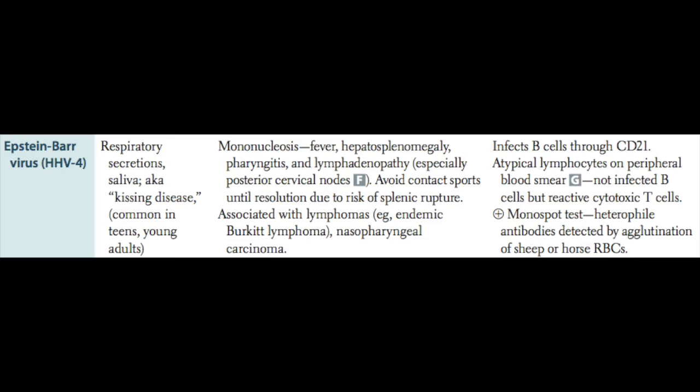Let's talk specifically about Epstein-Barr virus (EBV). This is one of the herpes viruses and it causes mononucleosis by infecting B cells. With an EBV infection, you want to think about fever, hepatosplenomegaly including splenic rupture, pharyngitis, and lymphadenopathy — especially the posterior cervical nodes. You also see abnormal circulating cytotoxic T cells, or atypical lymphocytes, on a CBC with differential.